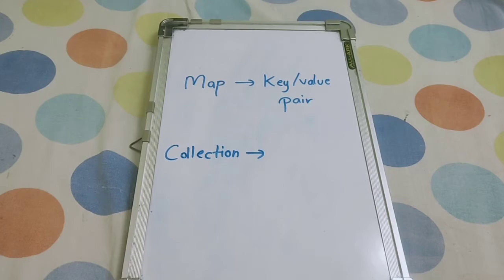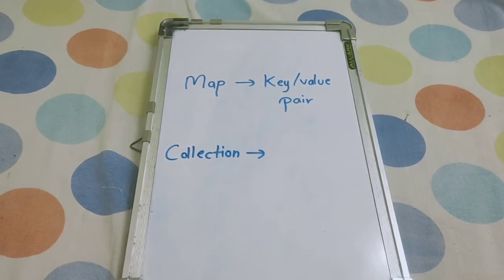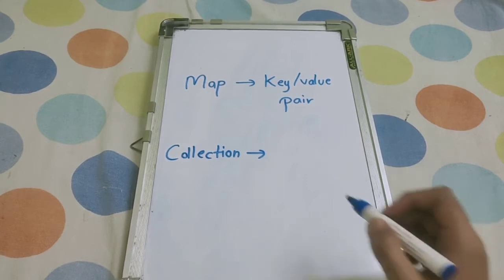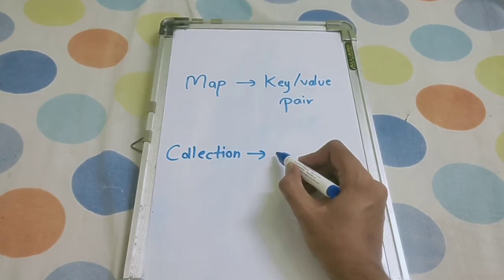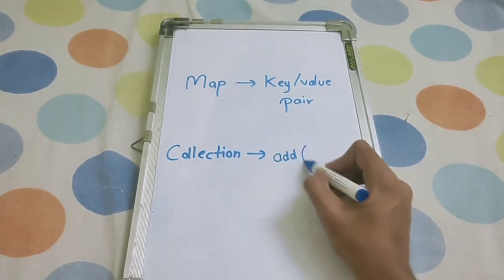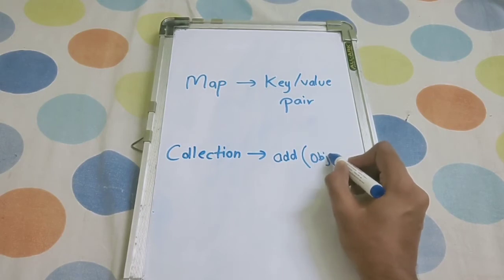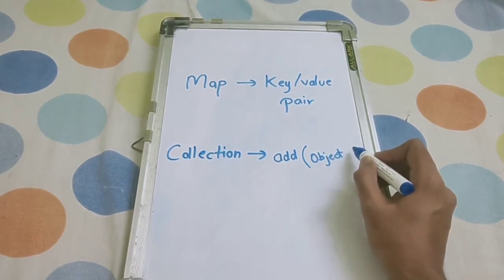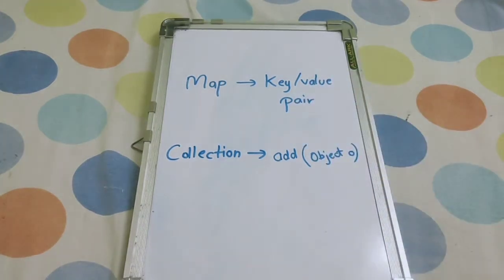The answer to this question is very simple. We all know that Map contains key-value pairs, but in Collection there are methods like one common method which is add of object. The add method is used very commonly, but if you see, the add method doesn't support any key-value structure.